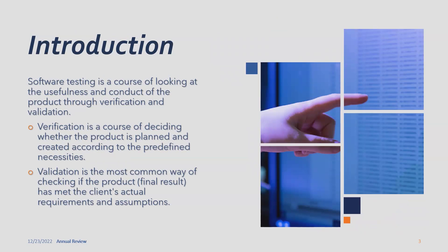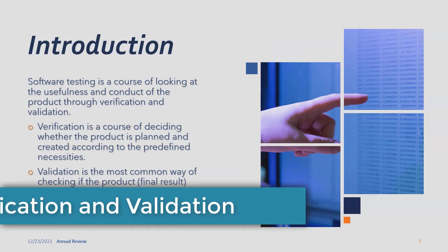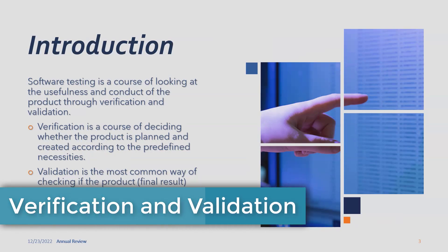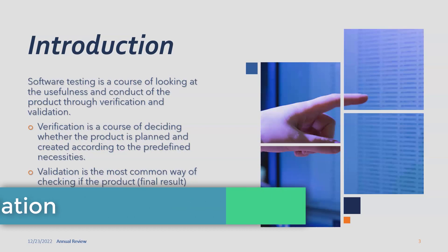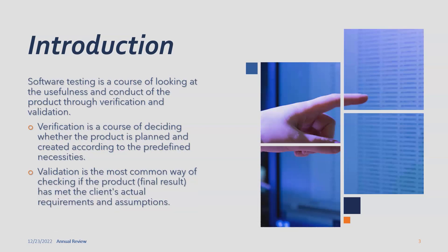Software testing is a course of looking at the usefulness and conduct of the product through verification and validation. When we talk about verification, this is deciding whether the product is planned and created according to predefined requirements. Whenever any software development process starts, we always receive a business requirement document, and based on this document, the testing team verifies whether the product is planned accurately.